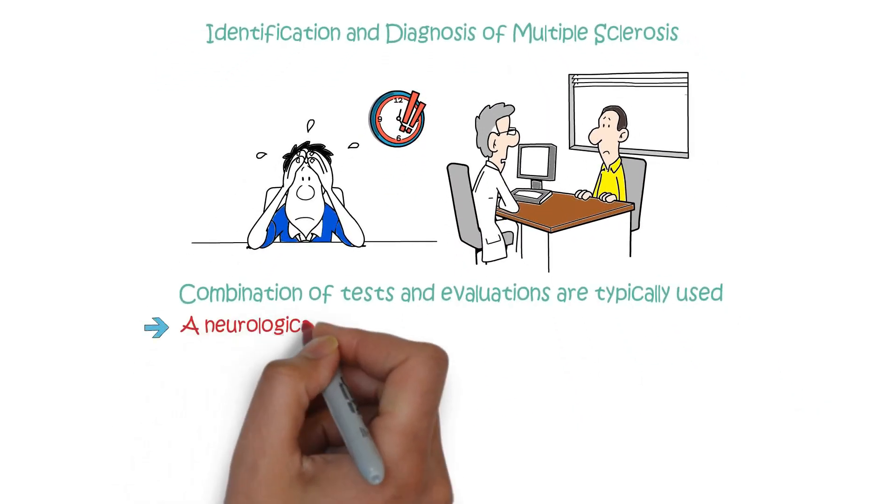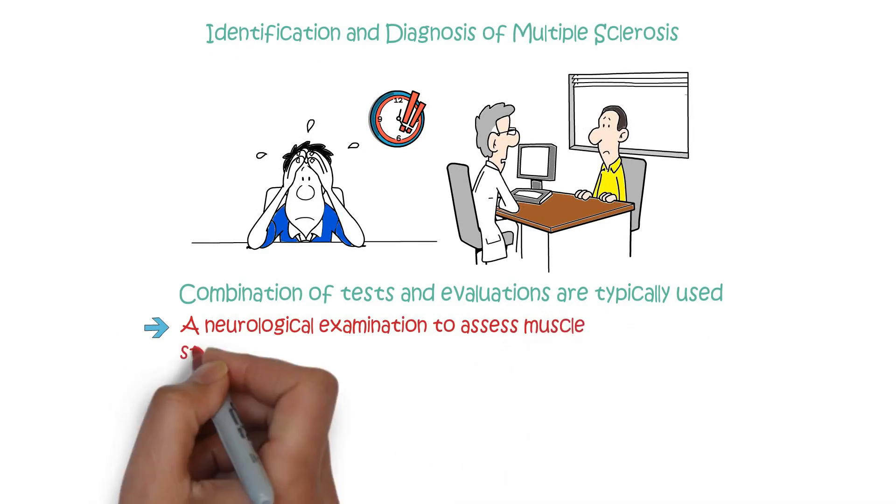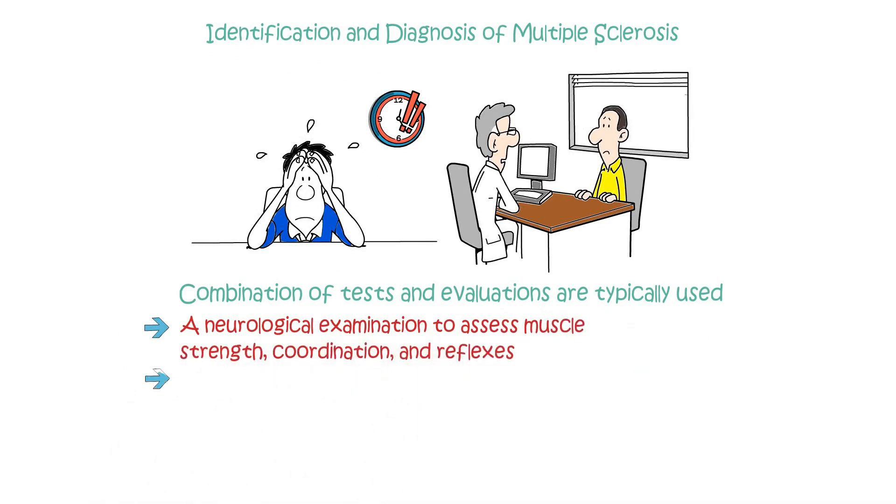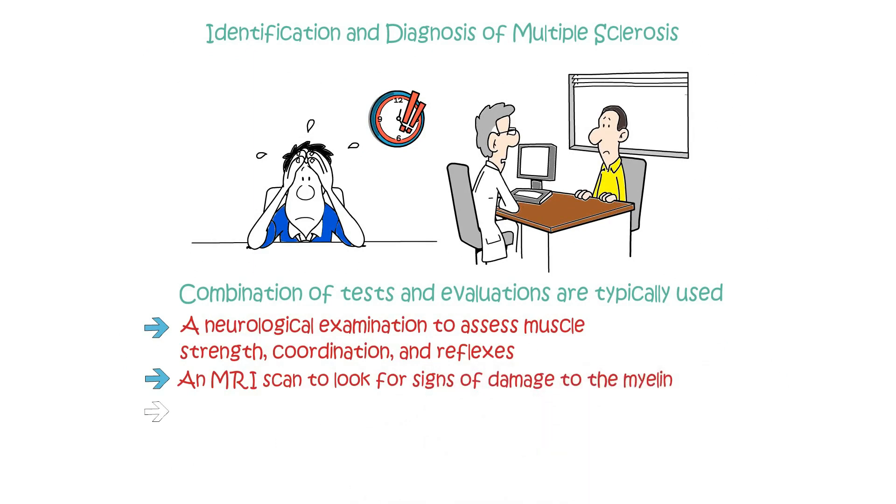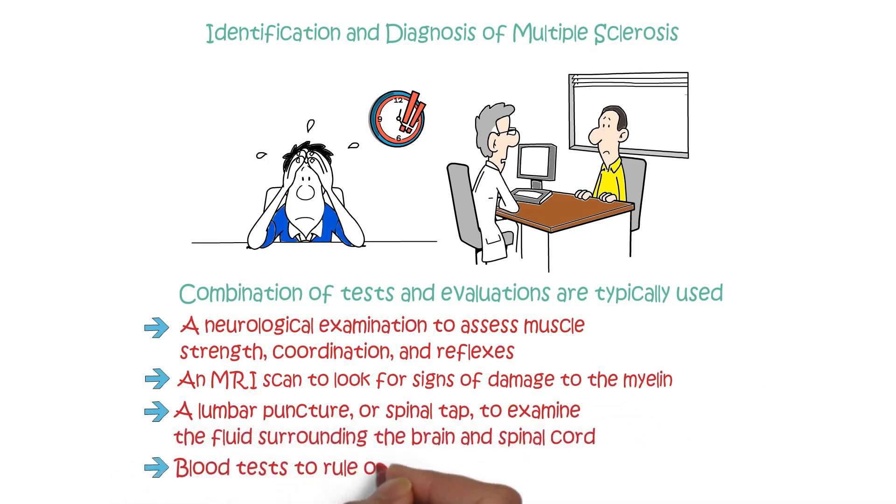A neurological examination to assess muscle strength, coordination, and reflexes. An MRI scan to look for signs of damage to the myelin. A lumbar puncture, or spinal tap, to examine the fluid surrounding the brain and spinal cord. Blood tests to rule out other conditions with similar symptoms.